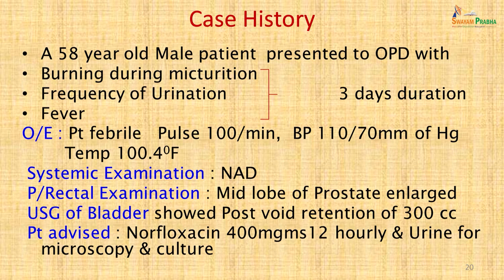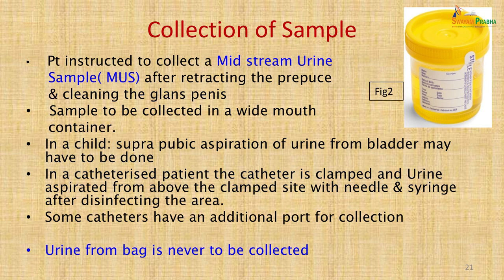The patient was advised norfloxacin 400 mg 12-hourly and urine was sent for microscopy and culture. A mid-stream urine sample was collected after retracting the foreskin and cleaning the glans with plain water — no antiseptic or soap was used as this can affect culture results. The sample was collected in a wide-mouth labeled container, letting the first and last flow pass and collecting only the middle portion.